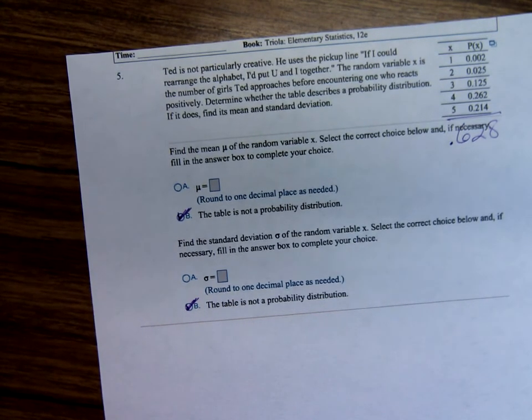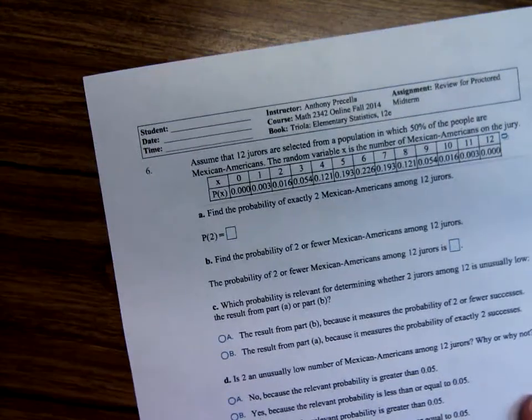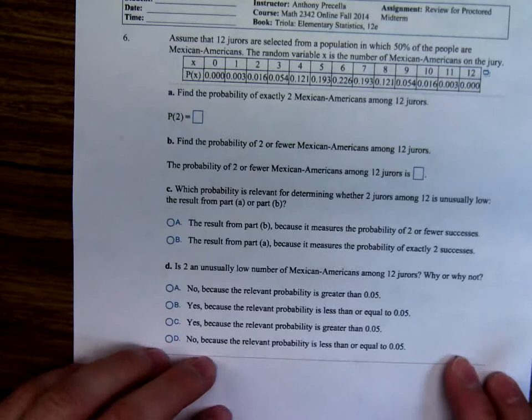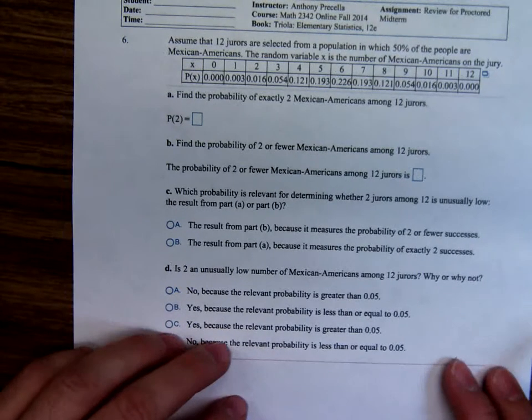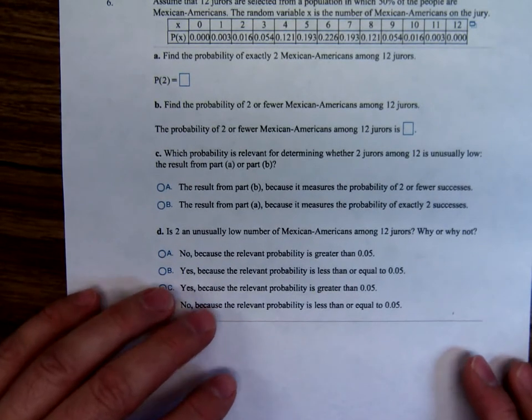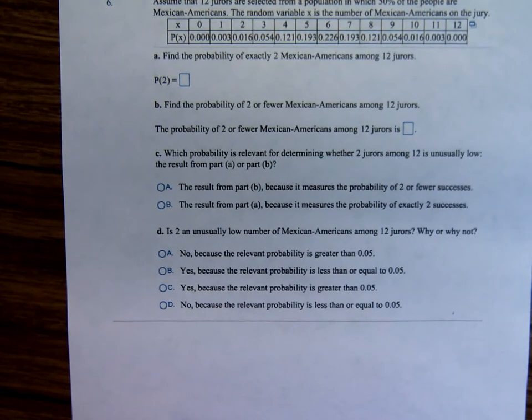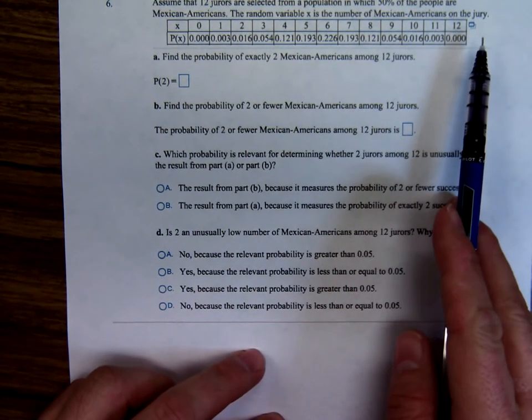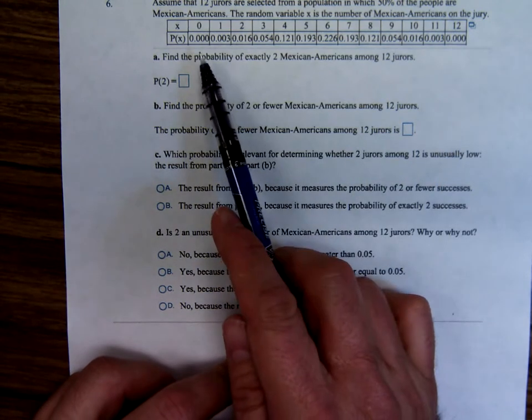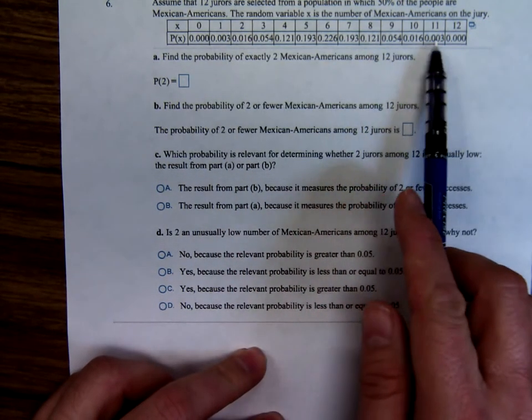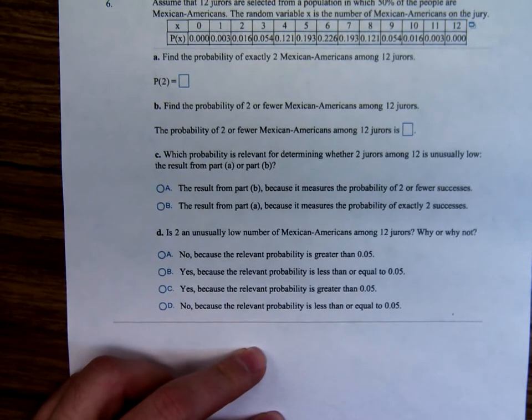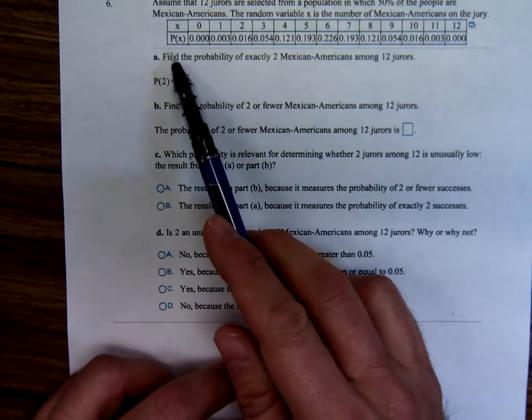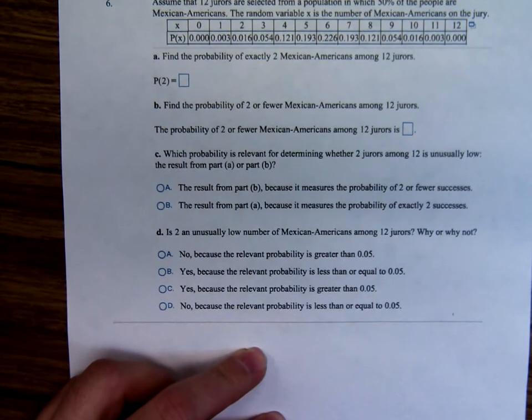Now, here's another probability distribution. Oh, table, let's see if it is a probability distribution. The random variable X is the number of Mexican Americans on the jury. Well, if we went ahead and added all of these up, it does equal one. So this is a probability distribution. And notice, it doesn't give you the option, not a probability distribution.